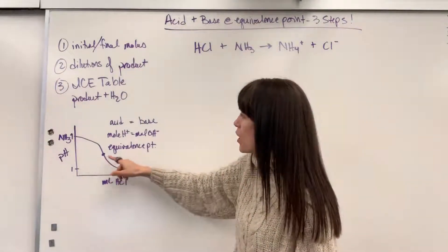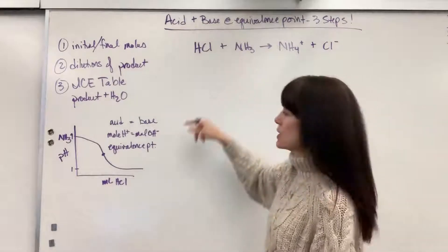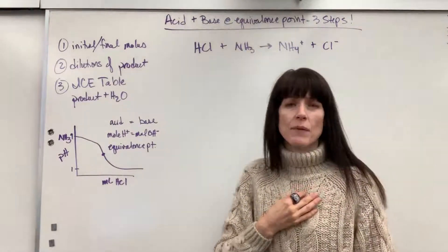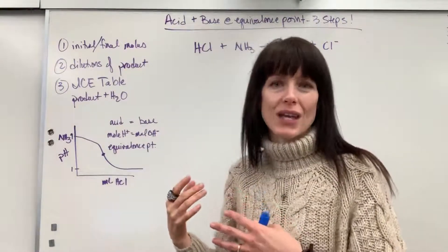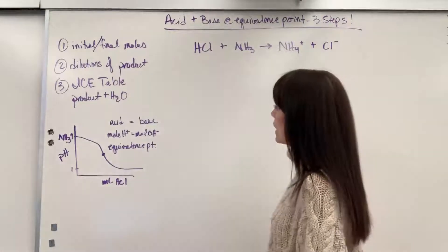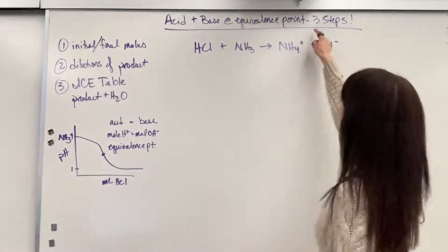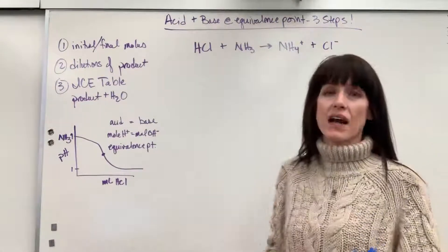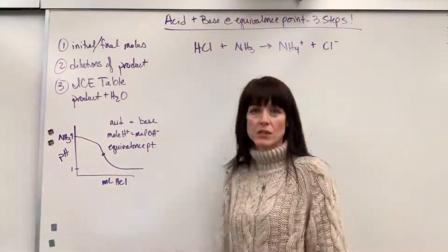If you keep adding HCl, we've consumed all of the base, and now we just have the acid that's going to remain with whatever the conjugate acid is that was produced right here — it's going to be the ammonium. Of all the acid-base reactions, this is the calculation that takes the most time.